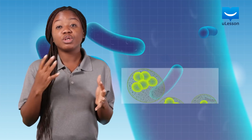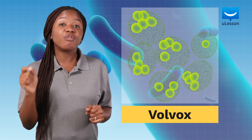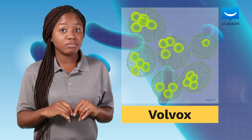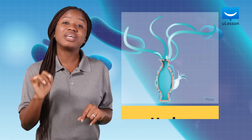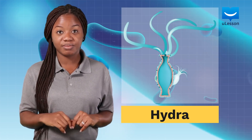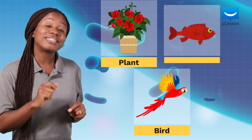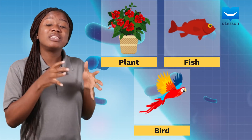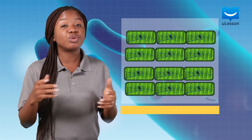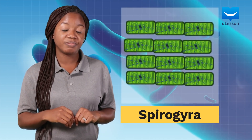Multicellular organisms include volvox, which exists as a colony. Hydra is another multicellular organism. Birds, rats, flowering plants, and sponges are also multicellular.